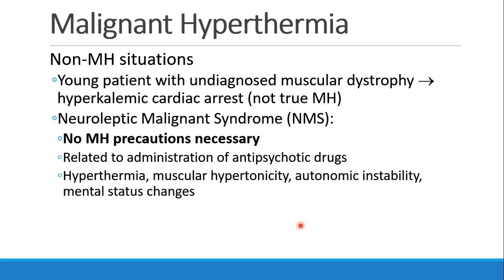There are some clinical situations which may sound like MH but really aren't. One example is a young patient with undiagnosed muscular dystrophy — this usually happens in boys because it's X-linked, and the clinical presentation often doesn't appear until they are 6 or 7 years old. That younger patient gets anesthesia, has a hyperkalemic arrest, and dies. This isn't true MH; it's due to the muscular dystrophy and probably related to the succinylcholine the patient received. Another example is Neuroleptic Malignant Syndrome (NMS) — those patients don't need MH precautions.